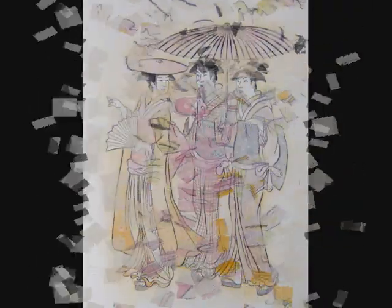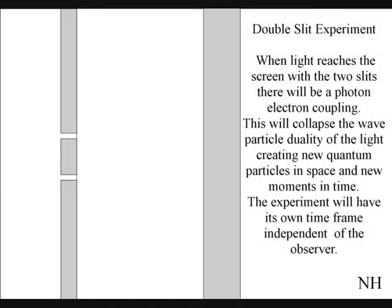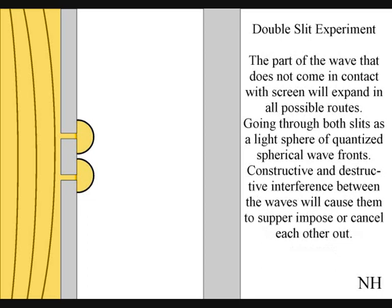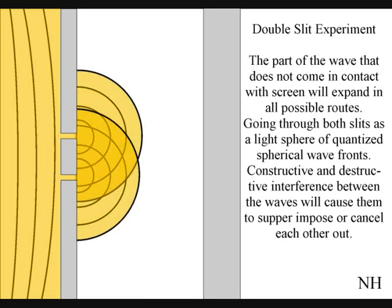The best way to see this happen directly with light is in the two-slit experiment. The light will expand in all possible directions as a wave-particle function of quantized wavefronts. When the wave function reaches the screen with the two slits, the photon will react with the electrons of the screen. This will collapse the wave-particle duality of the light, creating new quantum particles in space and new moments in time. The part of the wave that does not come in contact with the screen will expand in all possible routes, going through both slits as two light spheres of quantized wavefronts.